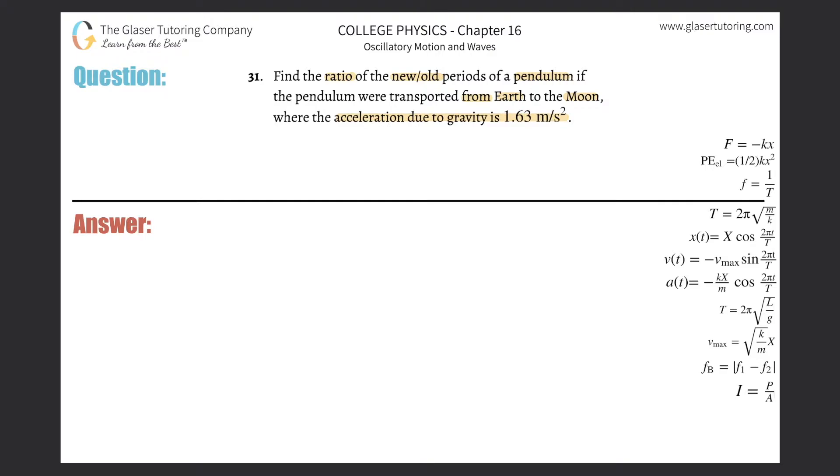Alright. So basically, you have a pendulum and you're going to move it from Earth to the Moon. What that means is that the pendulum that you're moving is the same as it is on the Earth and the Moon.